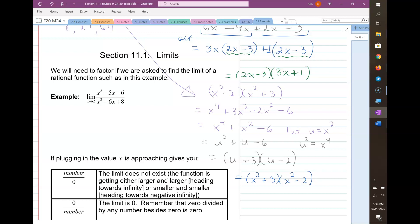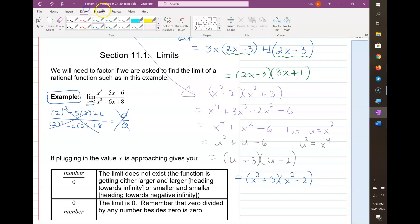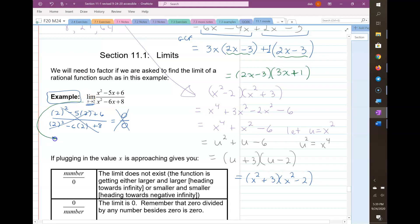And I'll show you why we need to be able to factor. So in this next example, if you just plug in the 2, let's see what happens. Because you always try that first. Try plugging in the 2. See what happens. So I'll have 4 - 10 + 6. That's a 0. And 4 - 12 + 8. That's a 0. Uh-oh. Nothing ever equals 0 over 0. So this is not working. And we need to go back to the drawing board and factor.